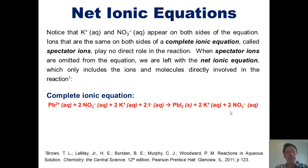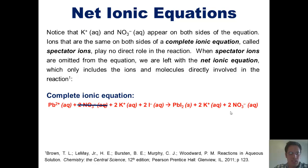When spectator ions are omitted from the equation, we are left with something called the net ionic equation, which only shows the ions and molecules that actually do any type of reaction. So we can cross out the nitrate because it's the same on both sides, and cross out the potassium because it's the same on both sides, just like we would in an algebraic equation.